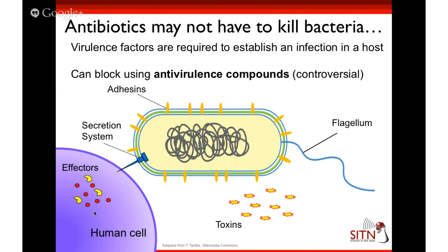Maybe killing bacteria is a high bar. Maybe we don't really have to kill them — we just have to stop them from causing an infection in human beings. One place to turn would be to virulence factors: the different parts of bacteria useful in invading a human cell, such as adhesins that stick to the cell and toxins they release to kill cells. Maybe we can develop antibiotics that block some of these processes — they wouldn't kill a bacterium outright, but they would prevent a bacterium from killing a human cell. Scientists are working on this kind of approach, though it's a little controversial and hasn't yet been demonstrated to work in human beings.